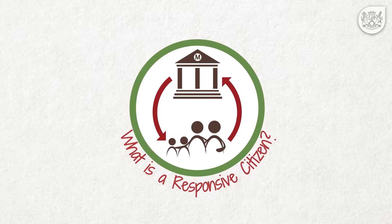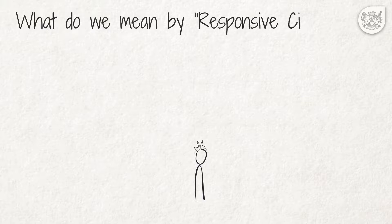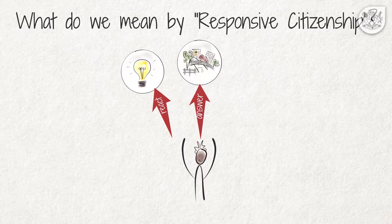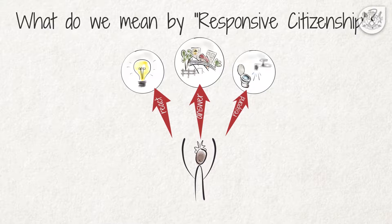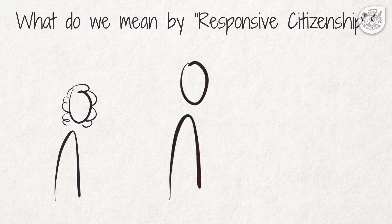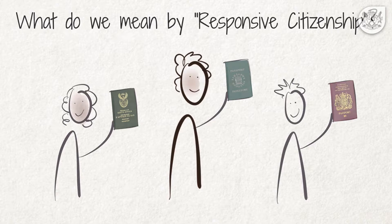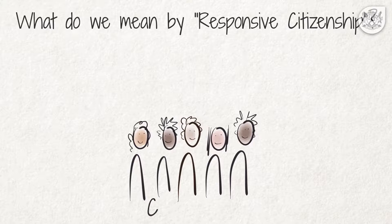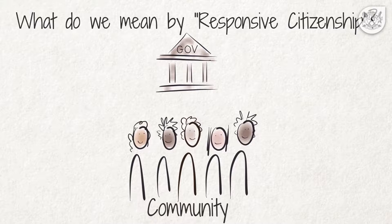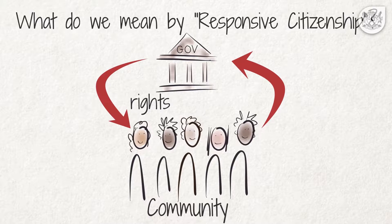What do we mean by responsive citizenship? To be responsive means to react, to answer or to respond to matters that are of interest. People are responsive when they are actively participating in matters that affect them. While citizenship is often linked to legally recognized nationality, in this context, citizenship refers to an individual who is a member of society in a particular community. Responsive citizenship therefore refers to members of the community who actively participate in the realization of their rights and the fulfillment of their duties.